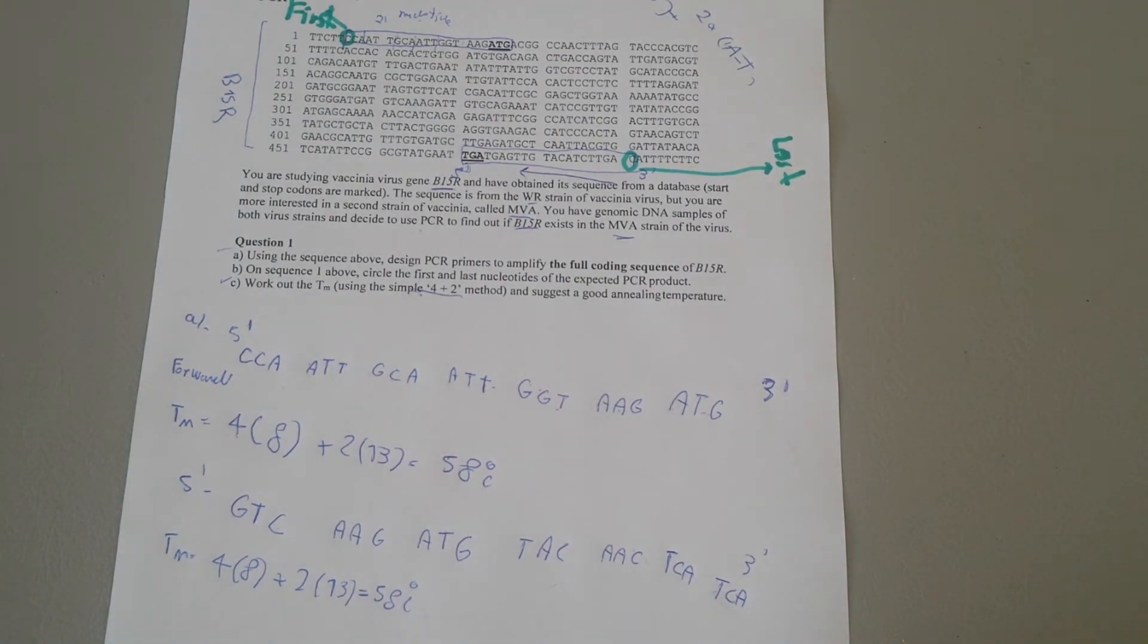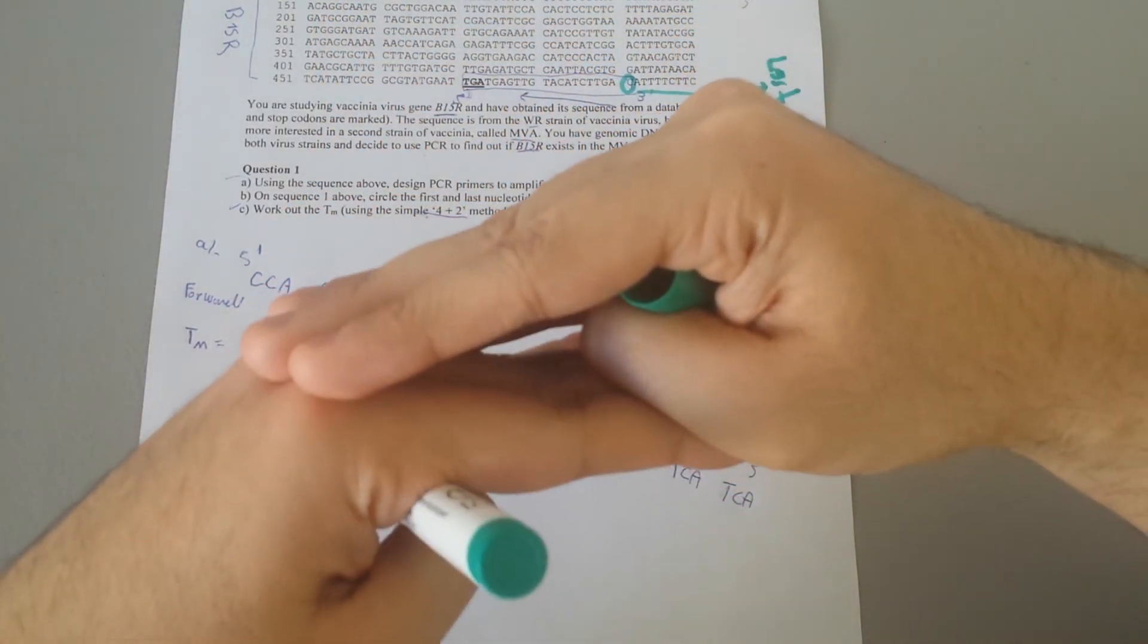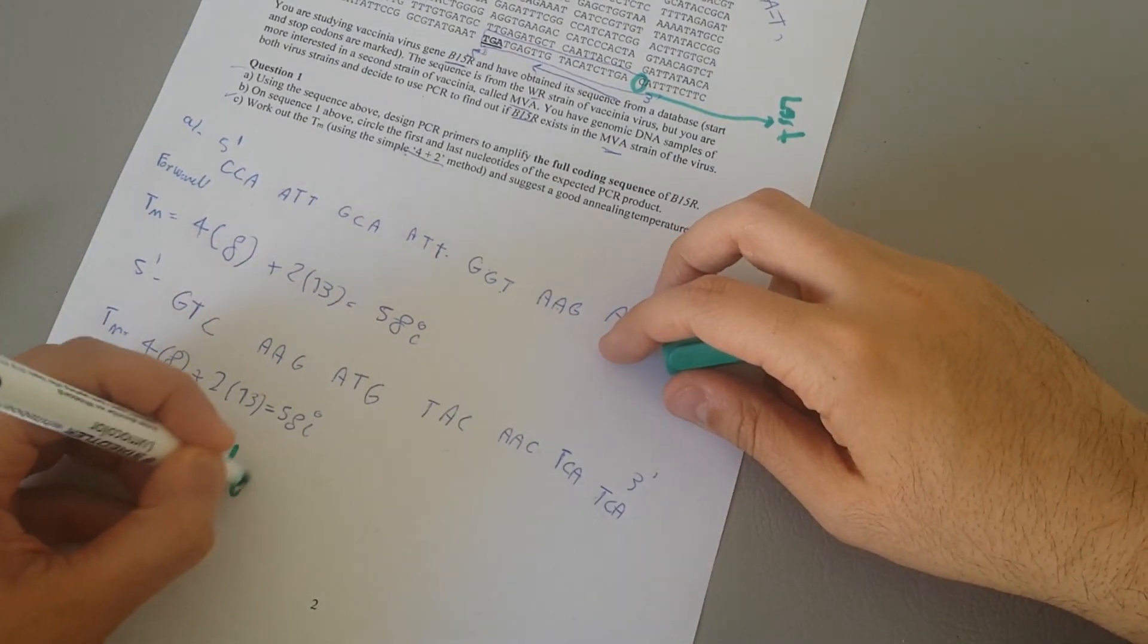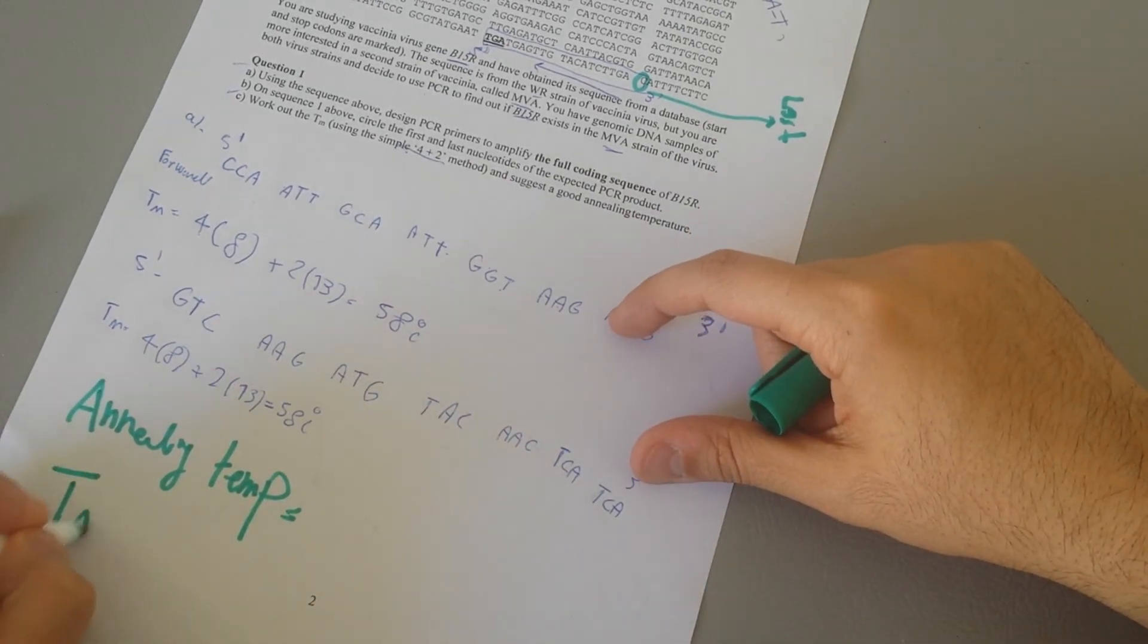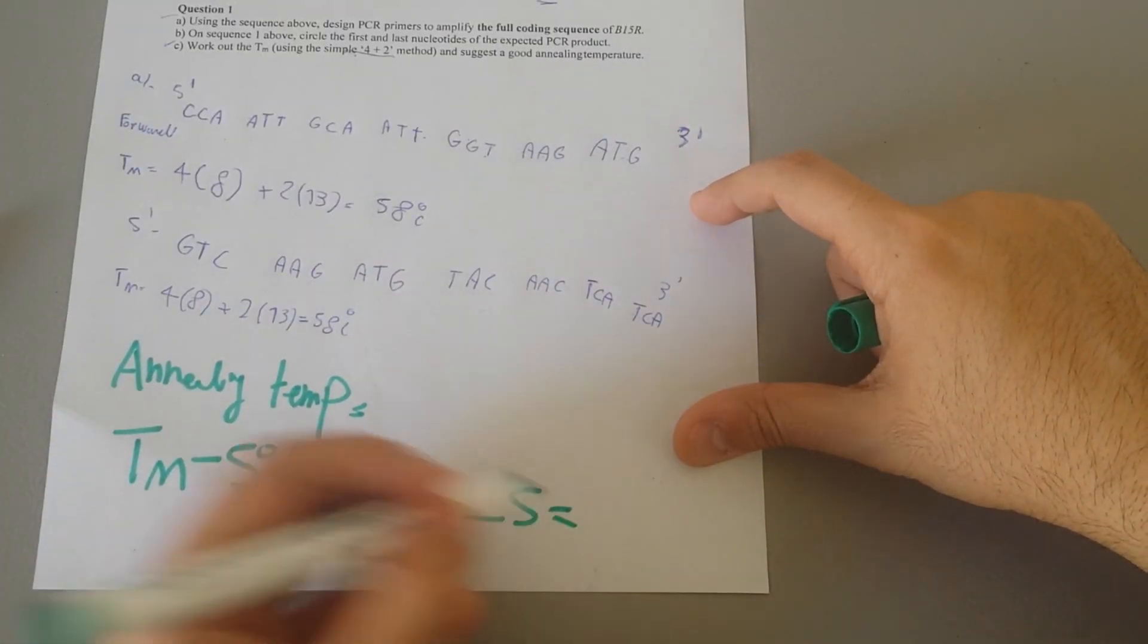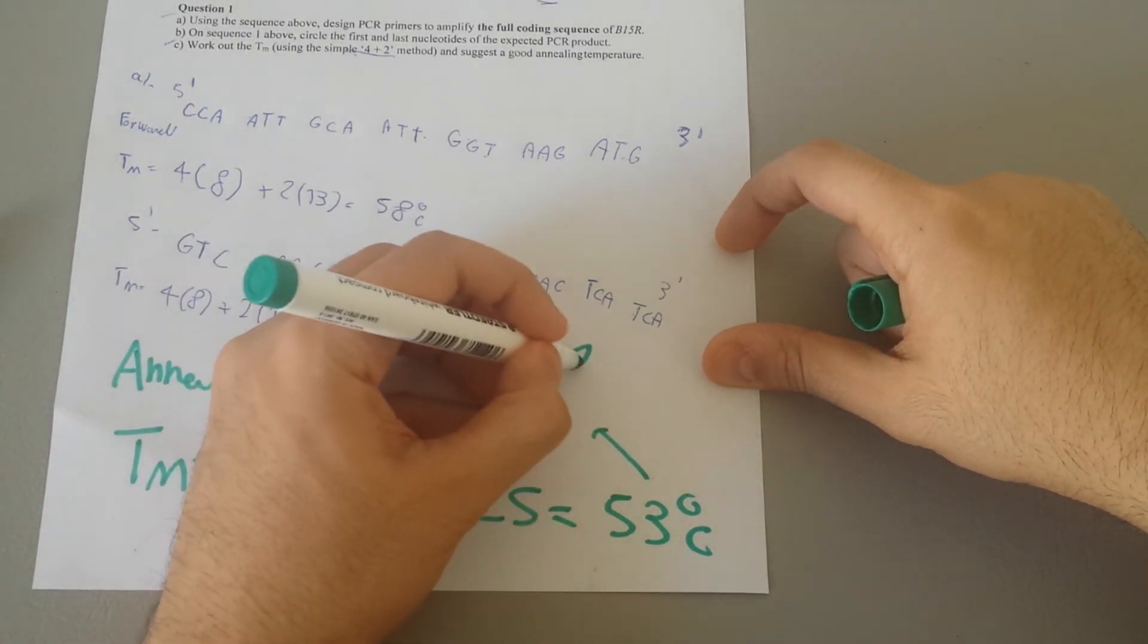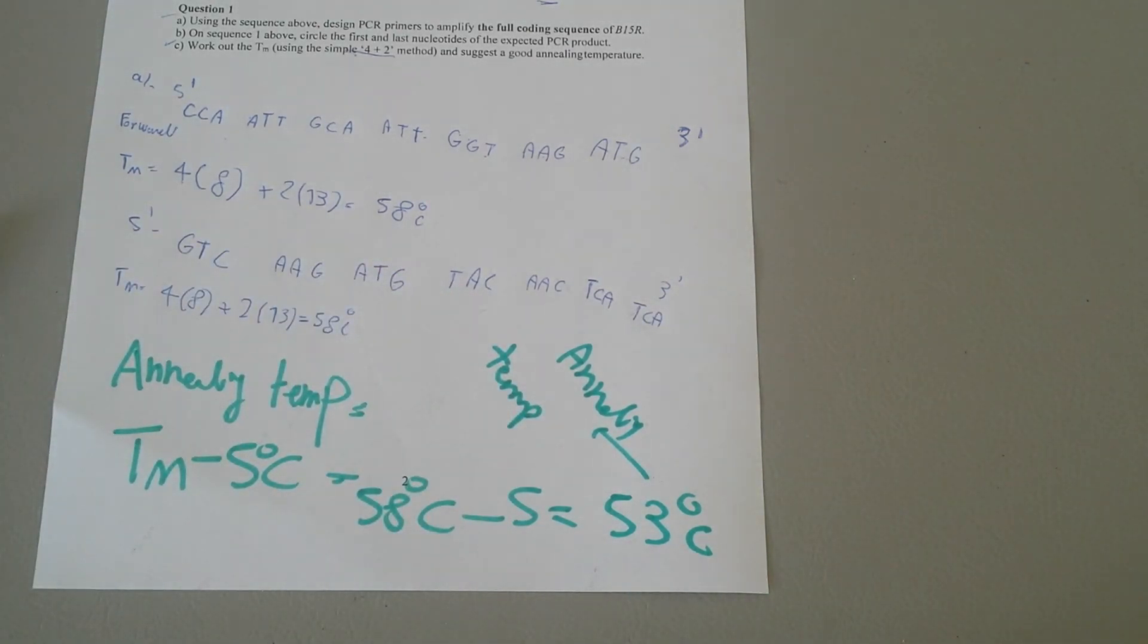Good, and work out the good annealing temperature. Annealing recall is the temperature you want to bring the two double strands together. Annealing temp, it is usually considered to be Tm minus 5 Celsius. So here we can say that 58 minus 5 which would give you 53. So that's our best annealing temperature that we have to program our PCR machine to do.